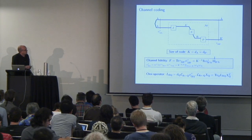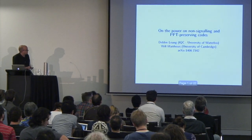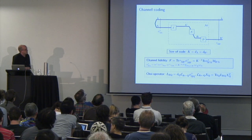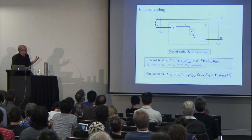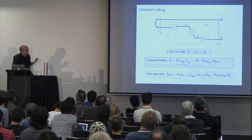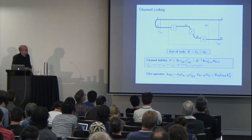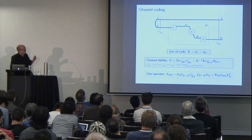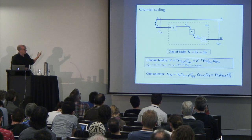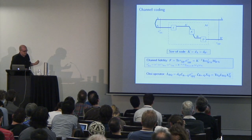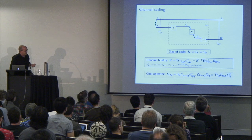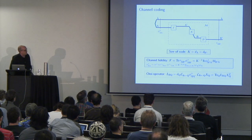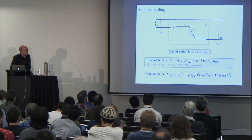If we're interested in sending the state of a k-dimensional quantum system over a noisy channel, we can use an error-correcting code, which consists of an encoding map and a decoding map, such that when composed with the noisy channel, we get some overall operation N mapping a k-dimensional system to a k-dimensional system. A nice way of measuring its ability to send quantum information is the so-called channel fidelity.